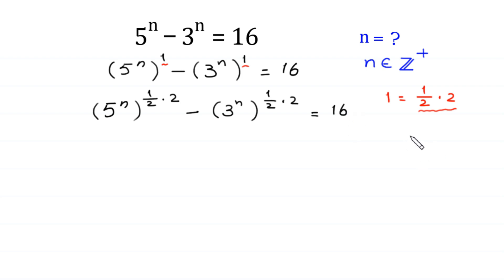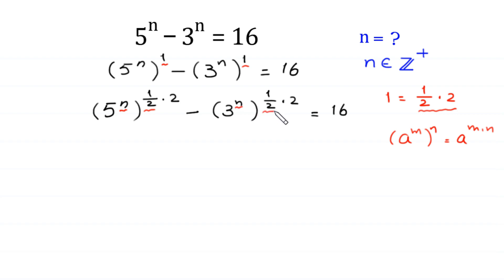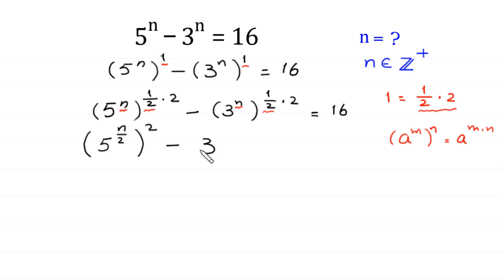By using the power rule — a to the power m, whole to the power n, equals a to the power m times n — we multiply this power n by 1 over 2, getting 5 to the power n over 2, whole to the power 2, minus 3 to the power n over 2, whole to the power 2, equal to 16.